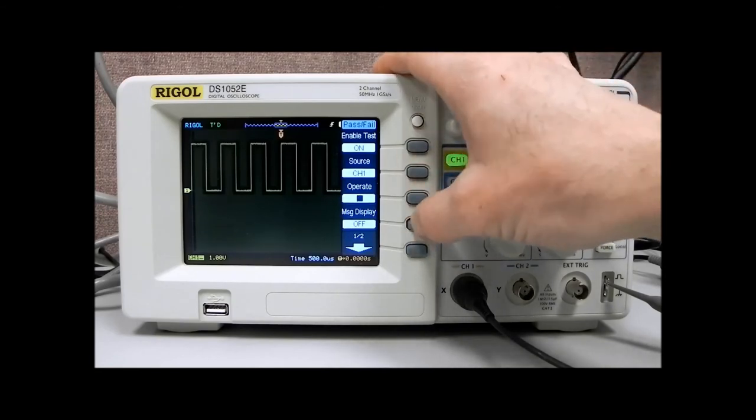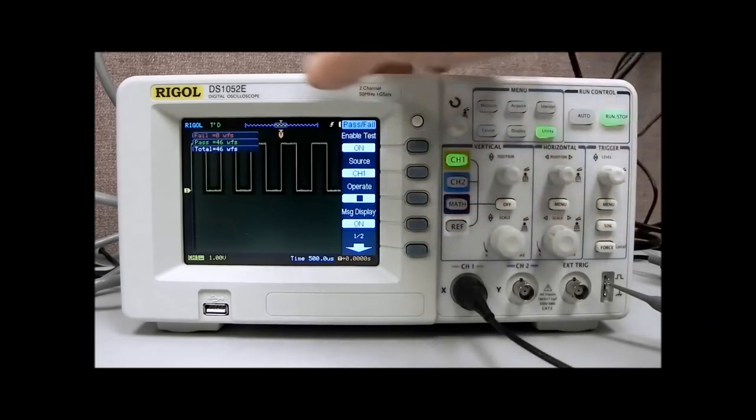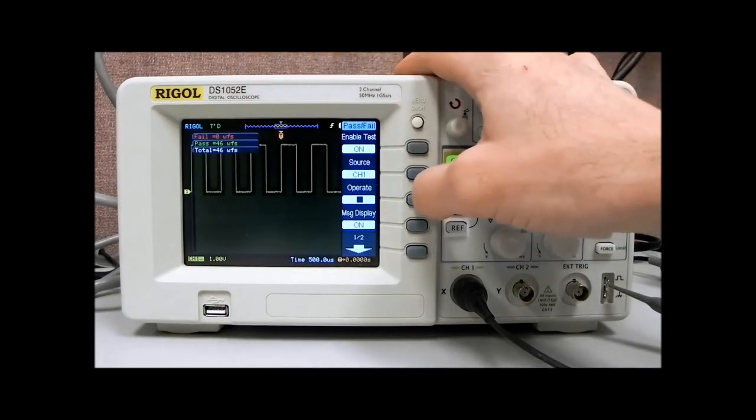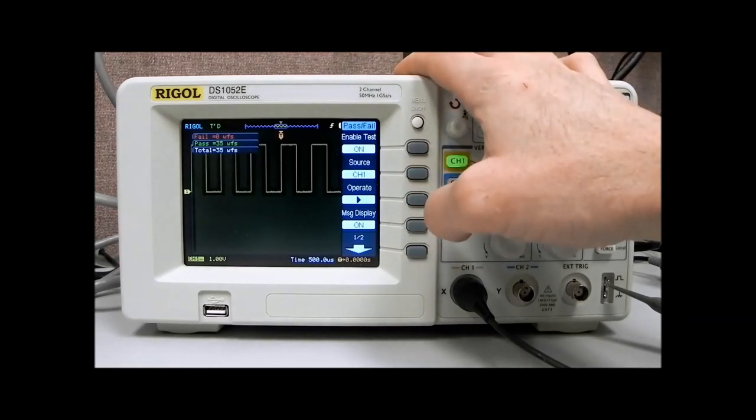Now we can pick the source, and we can turn the message display on, which is going to give us a fail, number of fails, number of passes, and then the total number of waveforms. So we can operate that, and you can see that'll increment.